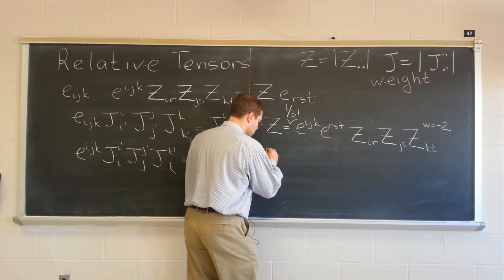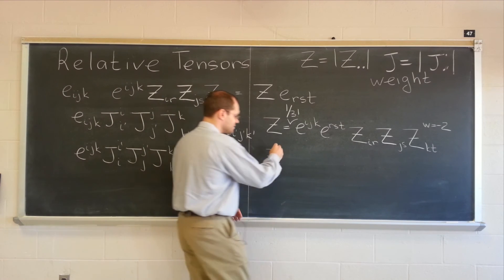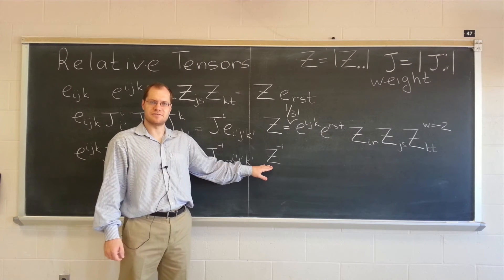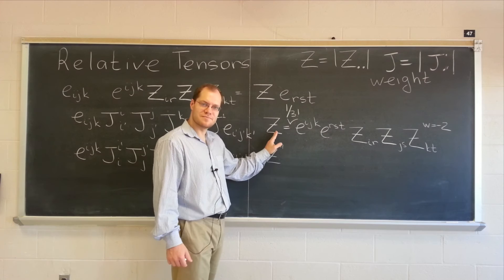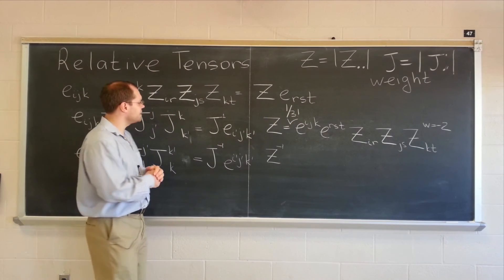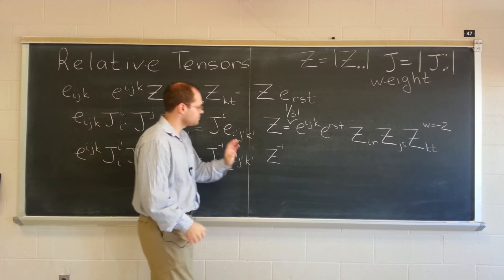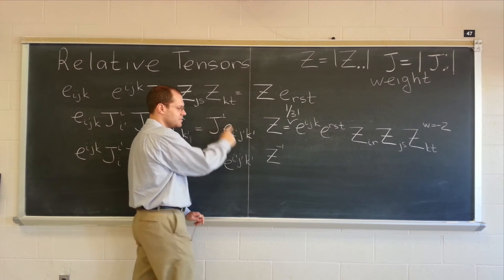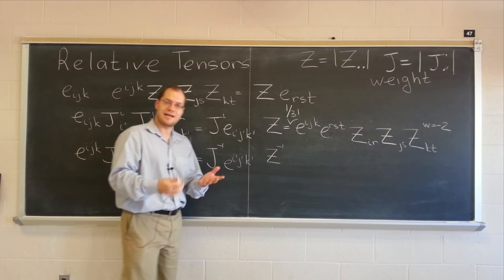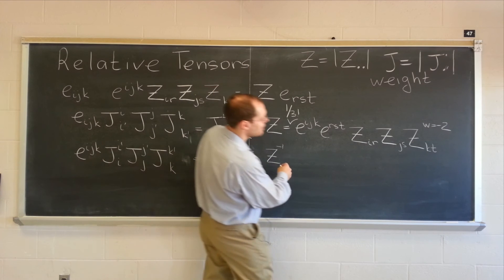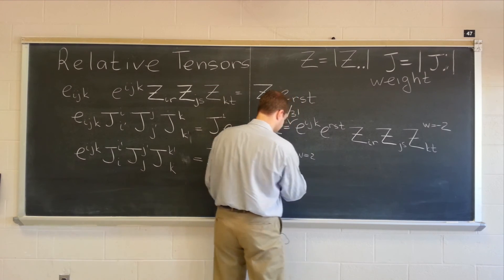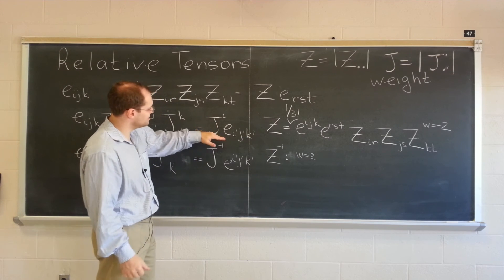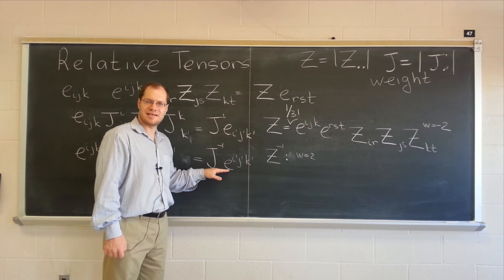And similarly, Z inverse. This would be the determinant of the contravariant metric tensor. Well, you can very easily guess. If this one transforms according to the rule that has the appearance of J to the minus two, then this one will transform according to the rule that has the appearance of J squared. So, this one has the weight of two. It is a relative tensor of weight two.